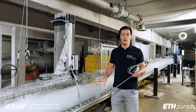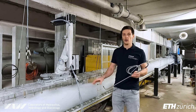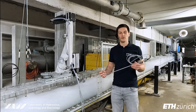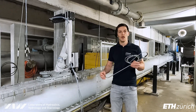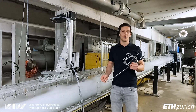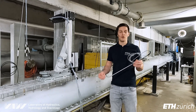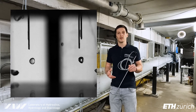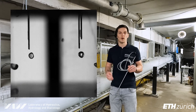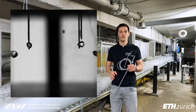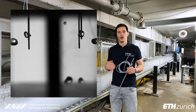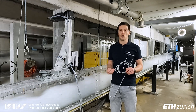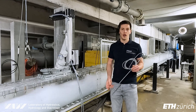However, measuring at these high flow velocities is quite challenging and we are constantly optimizing the design of the probes. In a recent study we were able to observe the measurement of air bubbles using a super slow-motion camera. With a special setup we could observe the bubble piercing from two perspectives — front and side view — at the same time. These observations allow us to better understand our measurements and improve their accuracy.